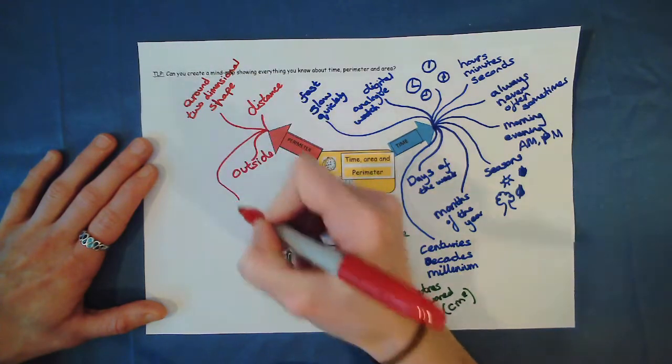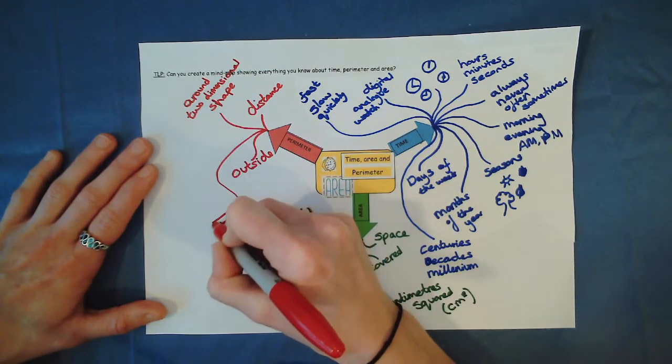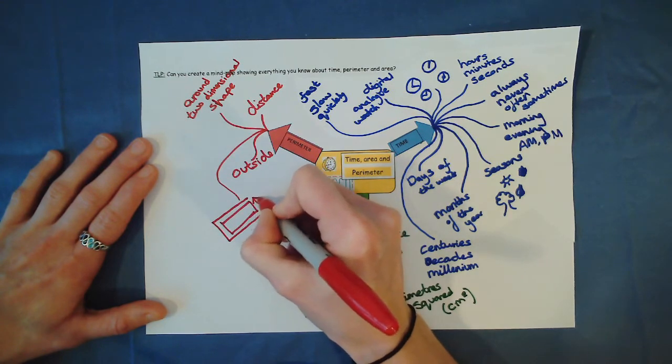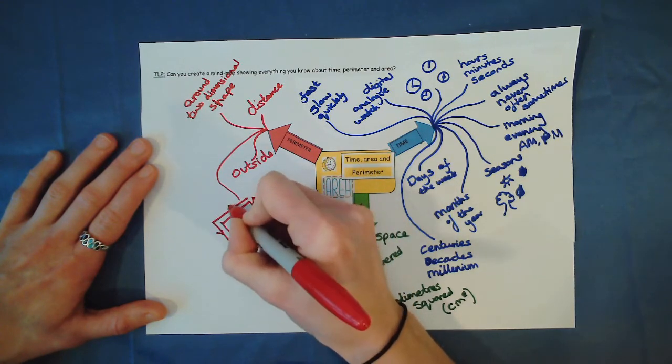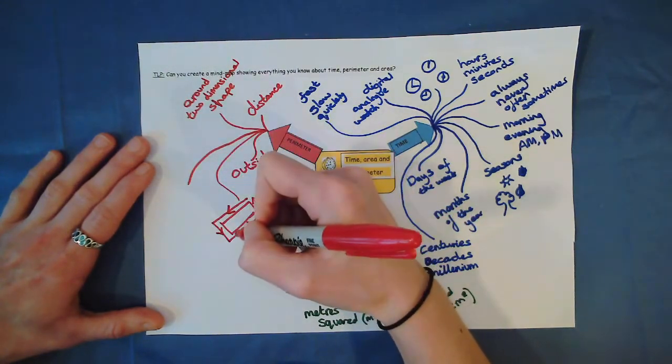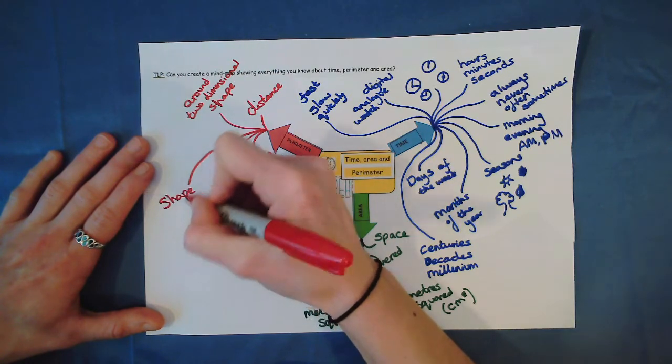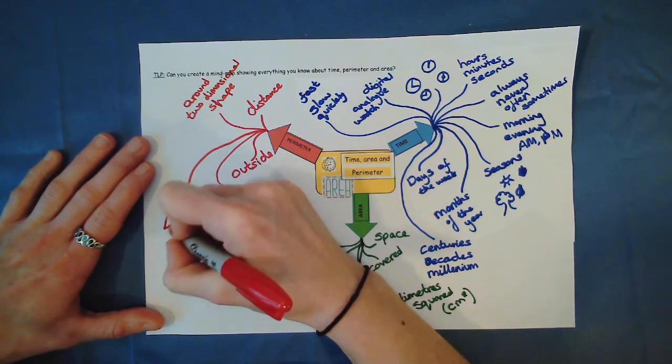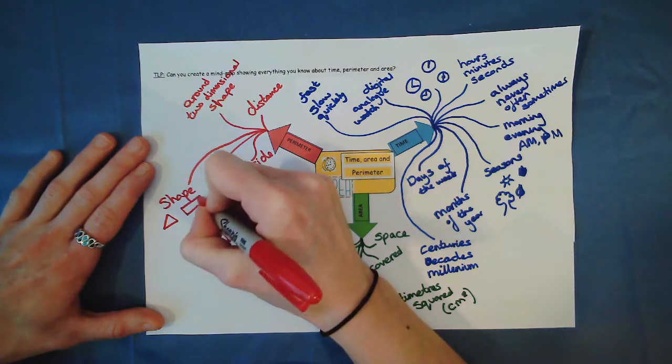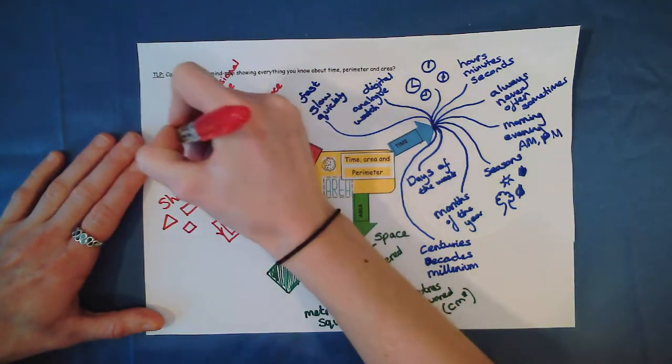Maybe we could draw a picture for that as well. If I've got my rectangle here, I could do that to show that the perimeter as it goes around the outside. How could you draw a visual of perimeter? And we could measure the perimeter of different shapes. So we could write shape on there and do some different shapes that we might be able to measure a perimeter of.